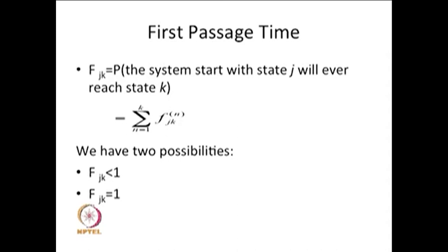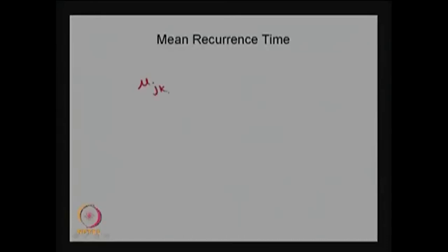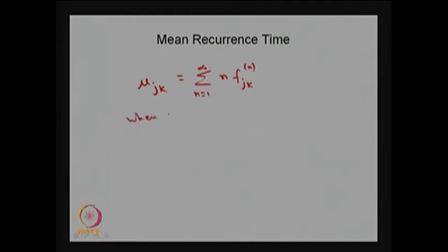Using this, I am going to give the next concept called mean first passage time or mean recurrence time. Mean first passage time is the same as mean recurrence time, defined as μ suffix jk — that is the average first passage time or average recurrence time when the system starts from state j to state k. It is computed as the sum of n times f_jk(n) over all possible values of n.